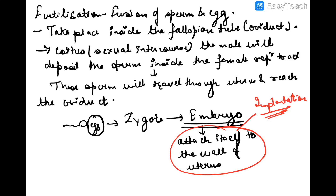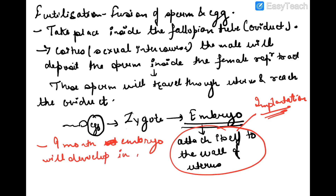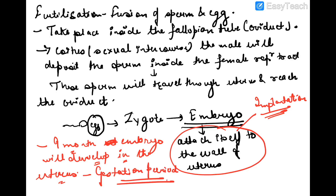For a period of nine months, the embryo develops inside the uterus. This period during which the embryo develops inside the uterus is known as the gestation period. After completing the gestation period, the embryo is ready for delivery.